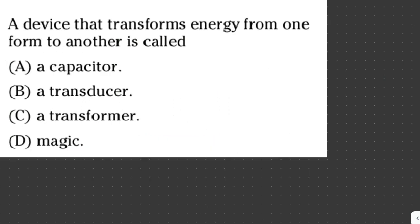A device that transforms energy from one form to another is called A, a capacitor. B, a transducer. C, a transformer. D, magic. So the answer here is letter B, a transducer. Because transducers transform energy and can be switches, strain gauges, temperature sensors, or inductive switches.